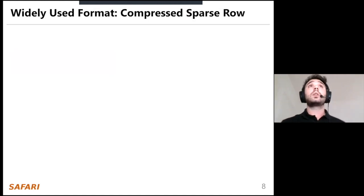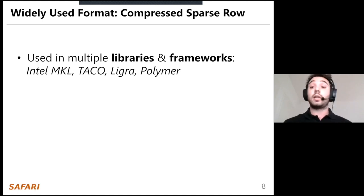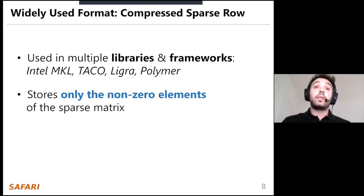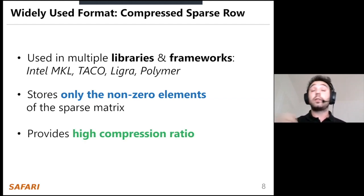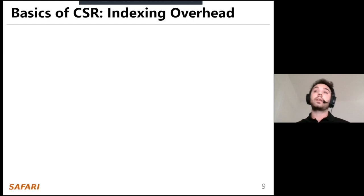The most widely used format for sparse matrix compression is Compressed Sparse Row, CSR. It is used in multiple frameworks and libraries like Intel MKL — the state-of-the-art library for sparse algebra — the TACO compiler, LIGRA, and Polymer, which are graph processing benchmarks. The main property of CSR is that it stores only the non-zero elements of the sparse matrix, providing a really high compression ratio. Let me explain how CSR works and where the indexing overhead comes from.